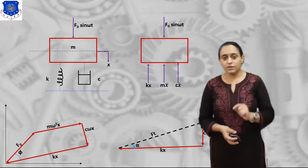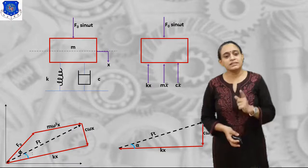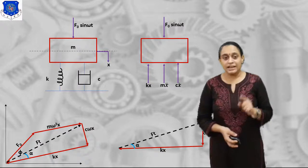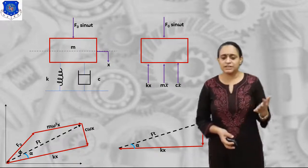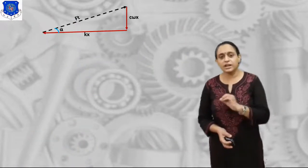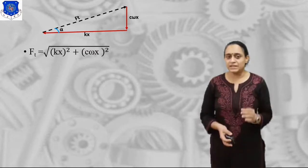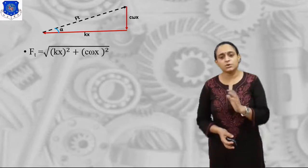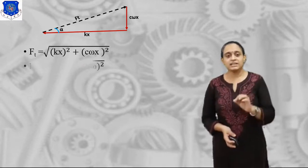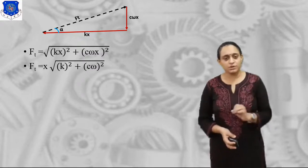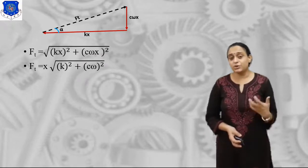Let us draw the same diagram in the previous figure with Ft and angle α. φ is the phase angle and α is the lag angle. Now let us solve the triangle of Cωx, Kx, and Ft using Pythagoras. So Ft = √(Kx² + (Cωx)²). We can factor out x, giving Ft = x·√(K² + (Cω)²). If we factor out K: Ft = x·K·√(1 + (Cω/K)²).